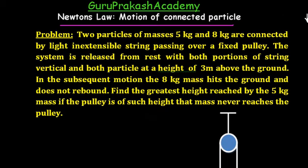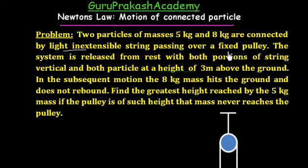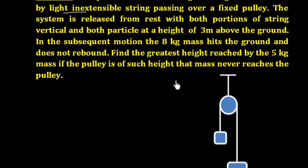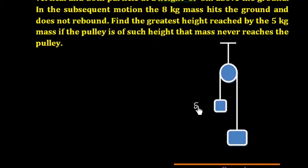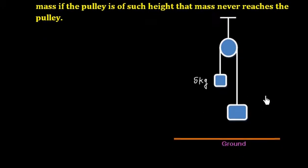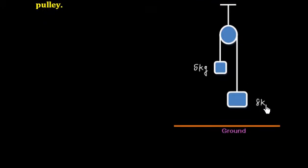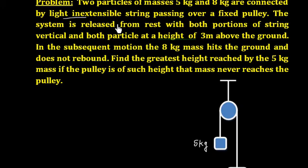We have a problem from Newton's second law related to the concept of connected particles. The question says two particles of mass 5 kg and 8 kg are connected by a light inextensible string passing over a fixed smooth pulley. The string system is released from rest.